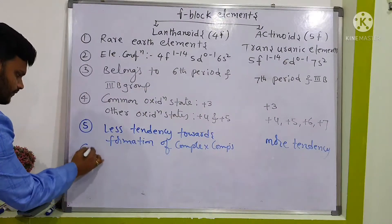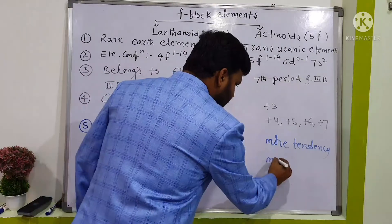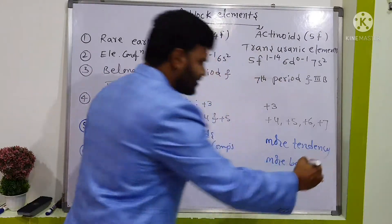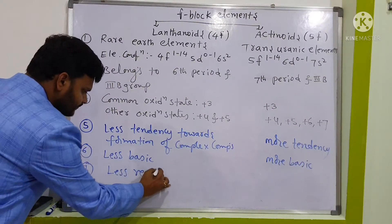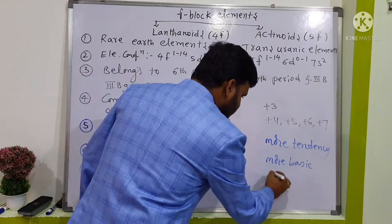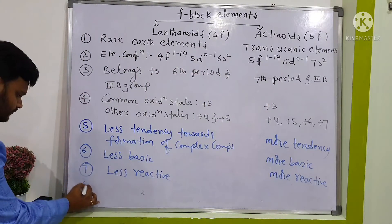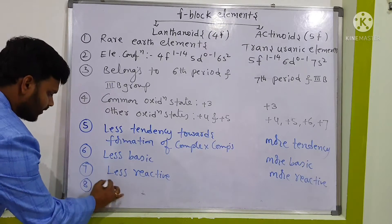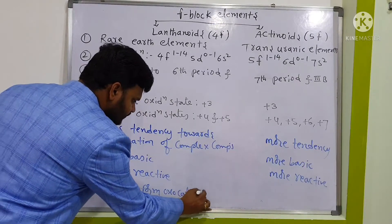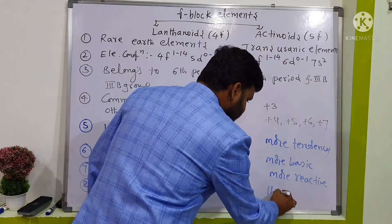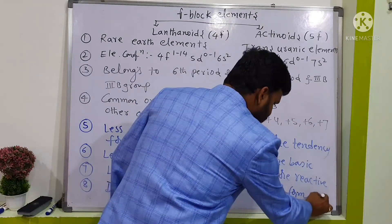Next, lanthanoids are less basic whereas actinoids are more basic. Lanthanoids are less reactive whereas actinoids are more reactive. Lanthanoids do not form oxocations, but actinoids do form oxocations.